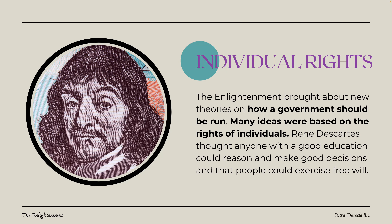The Enlightenment brought about new theories about how government should be operated, and many of those ideas were based on individual natural rights. One philosopher from the scientific revolution, René Descartes — remember, 'I think, therefore I am' — mentioned that anyone with a good education is able to reason. If they're able to reason, they can make good decisions, exercise free will, and make their own choices for how they want to live their lives.